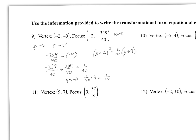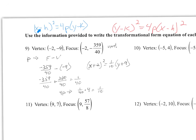The first thing we need to consider is finding the 4p. The equation we're looking for is either (x − h)² = 4p(y − k) if it's vertical, or (y − k)² = 4p(x − h) for a horizontal parabola.